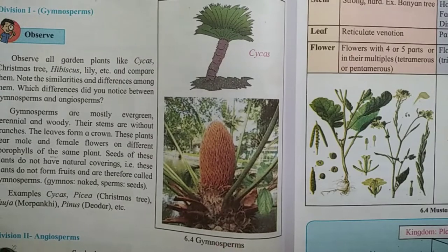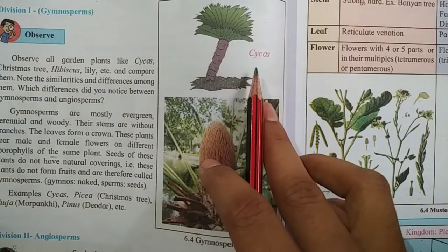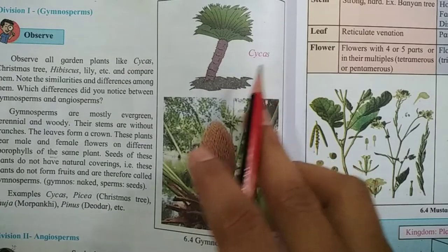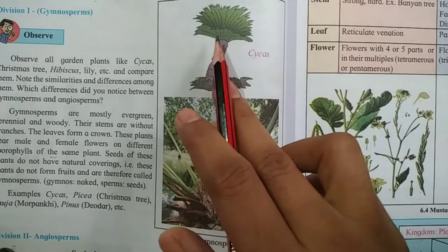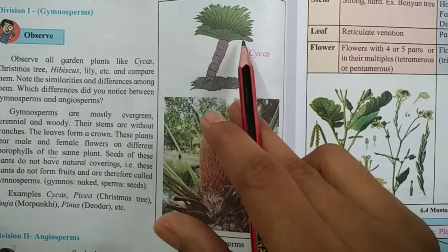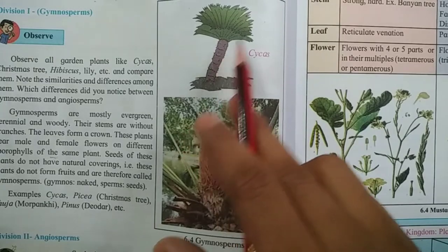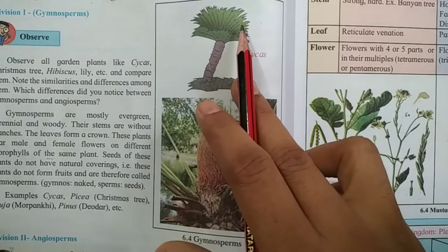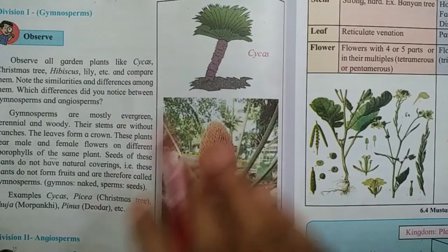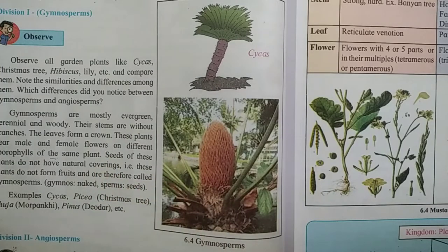See here — for Gymnosperms, a picture of Cycas is shown. Look at the structure — the leaves are like a crown, there are no branches, and it is evergreen with a woody structure. These are the characteristics of Gymnosperms.